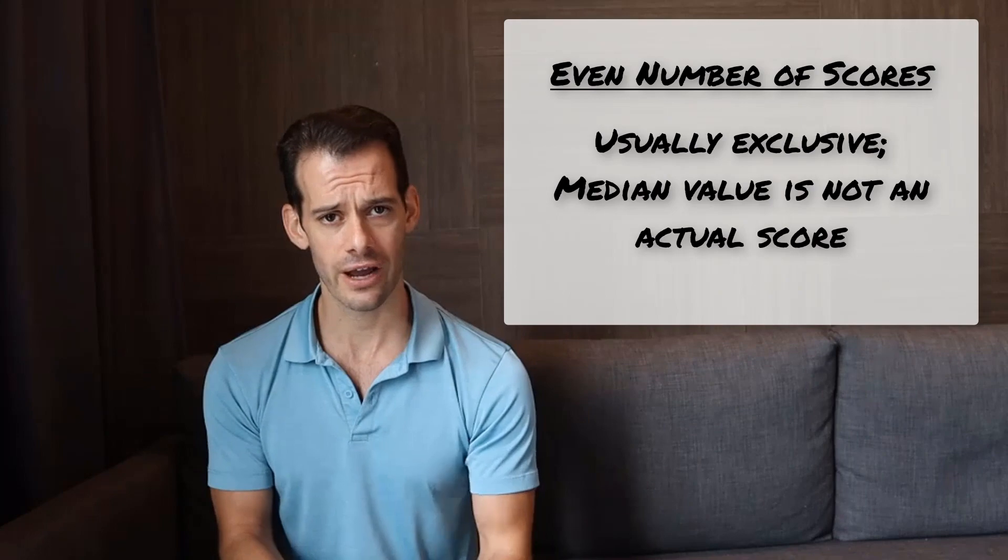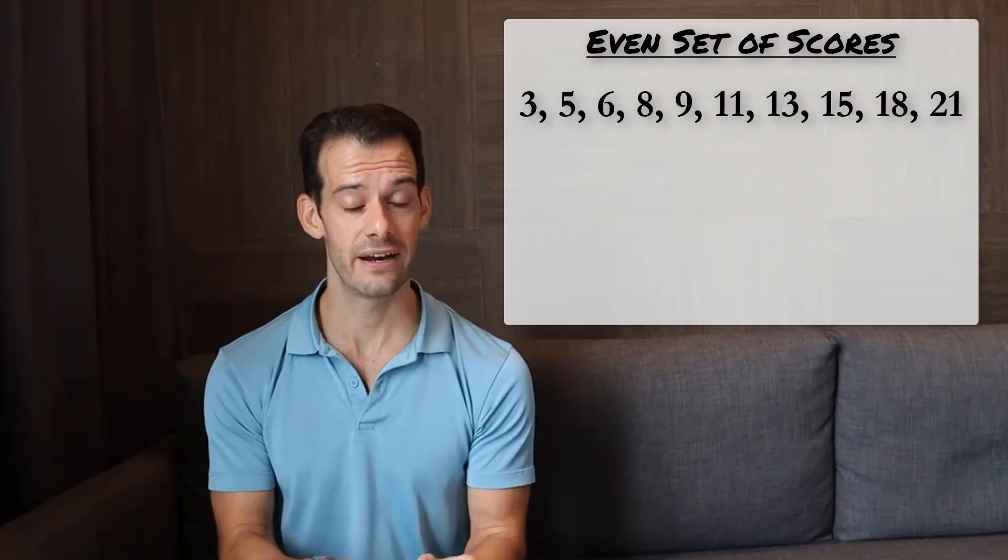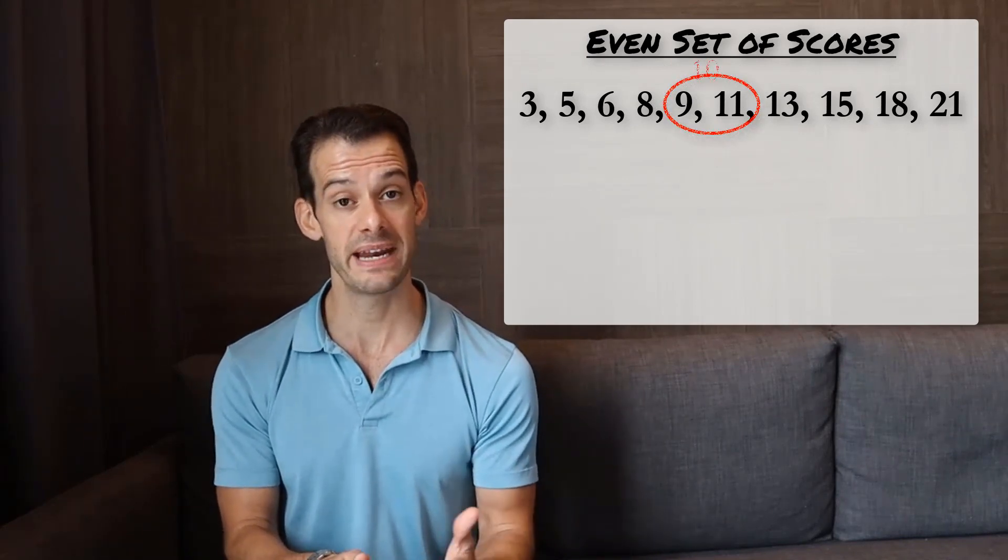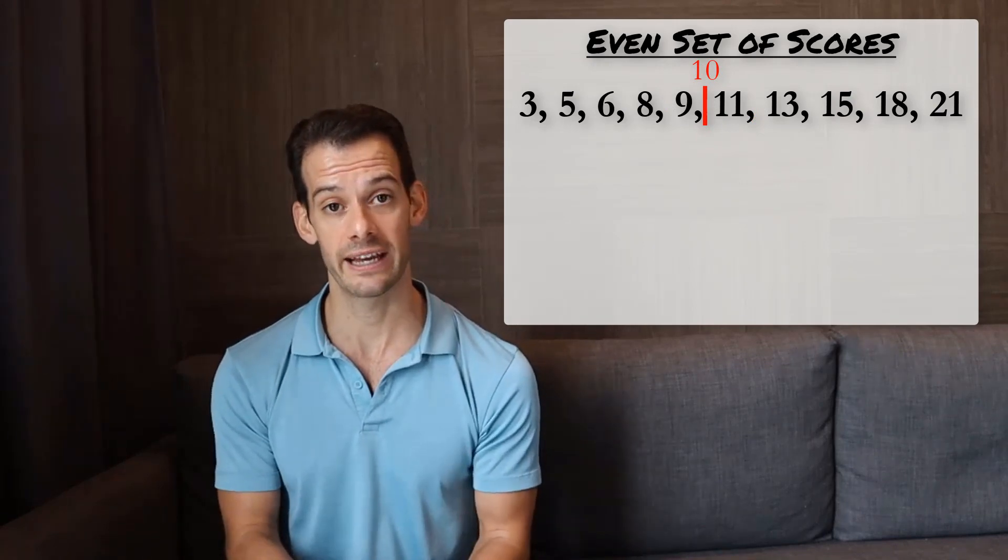So let's take a look at a set of 10 scores and see what I mean. Since we have 10 scores, our median is going to be the mean of the fifth and sixth positions, 9 and 11. So this gives us a median of 10.